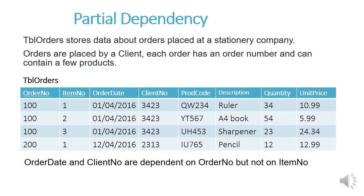An example would be the table Orders. This table stores data about orders placed at a stationery company. Orders are placed by a client, and each order must have an order number and can contain a few products. The columns are: order number, item number, order date, client number, product code, description, quantity, and unit price. There is a composite key which is order number and item number.